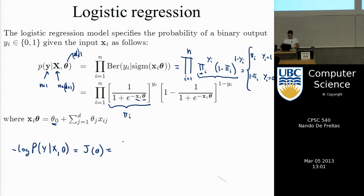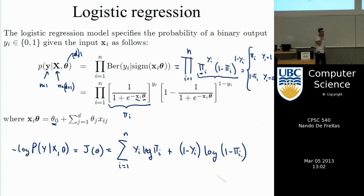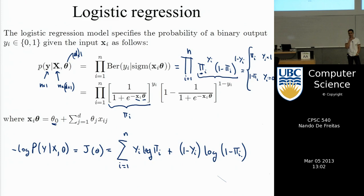If you take the log of the likelihood, the log of the product becomes a sum from i equal 1 to n. You get y_i log of pi_i plus 1 minus y_i log of 1 minus pi_i. This cost function is the cross entropy — it's the entropy between y and pi, called cross entropy because it's across two quantities.